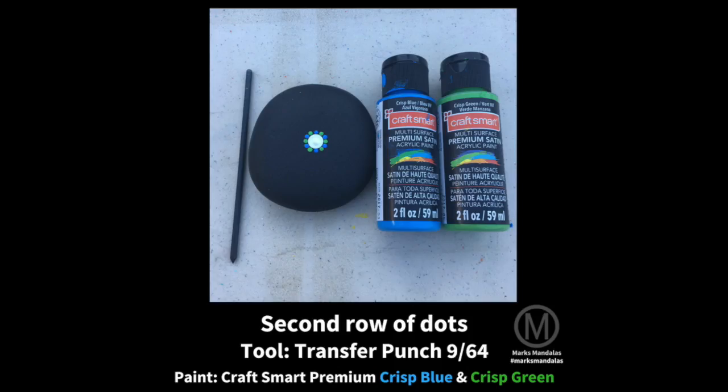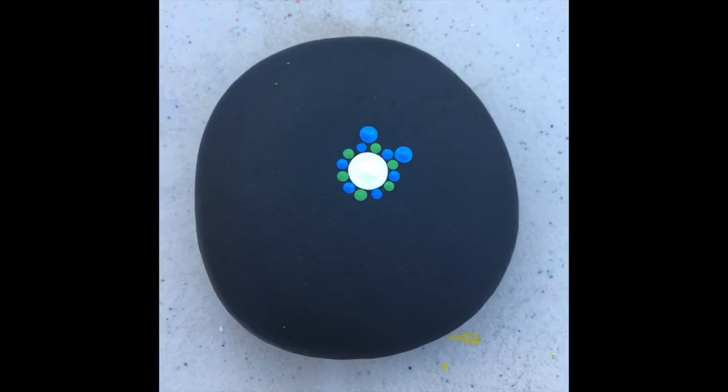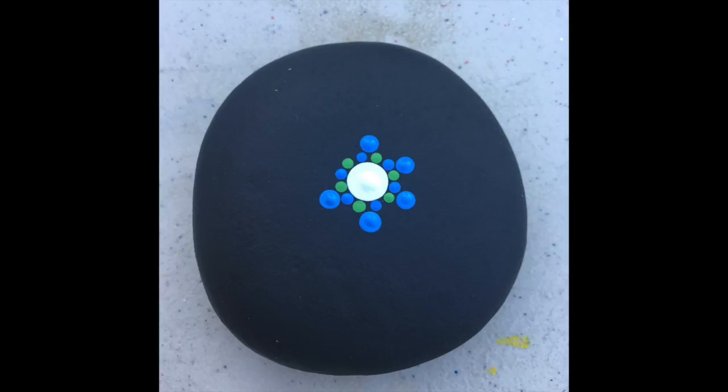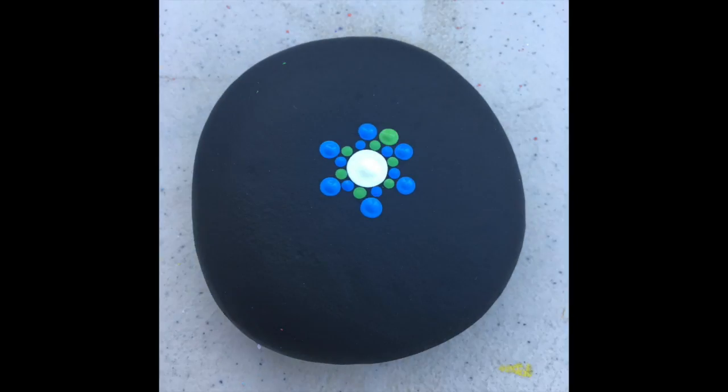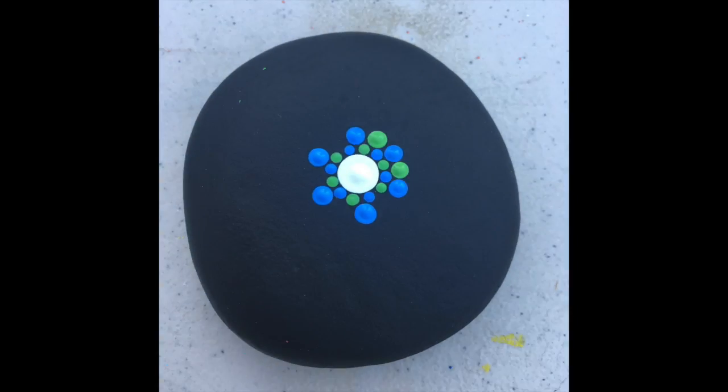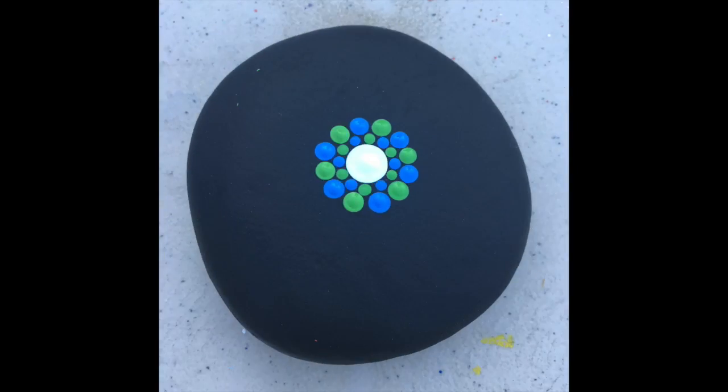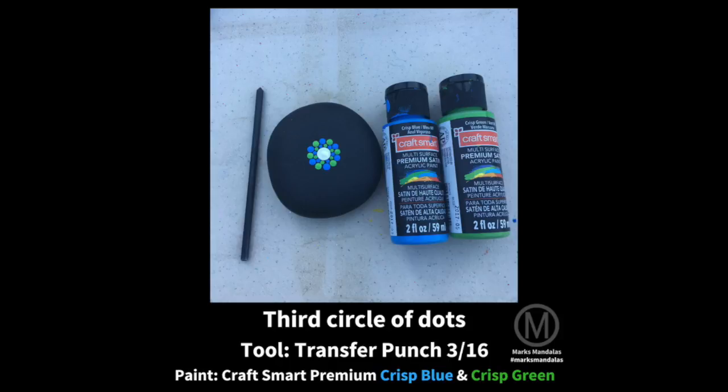I am continuing to do the 12, 6, 3 and 9 o'clock placement of the dots to help keep everything spaced evenly apart in the inner circle of dots. In doing so I had to do a blue dot for 12 and 6 and green for the 3 and 9, and then as you watch the video you will see how each successive dot is placed.